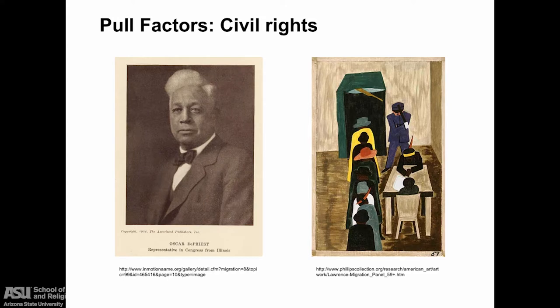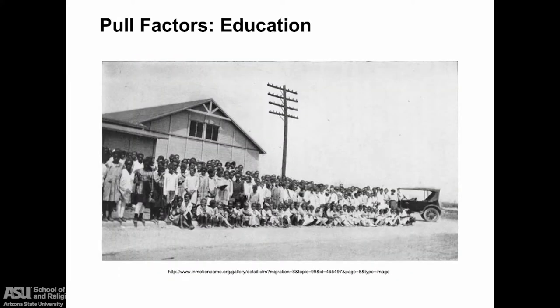In the North, African Americans had civil rights — another pull factor drawing them to northern cities. They had voting rights in many states and achieved majorities or pluralities, thereby electing African American officials. They also formed community organizations and sought educational opportunities not available in the South for their children. Pull factors were political, economic, as well as social.